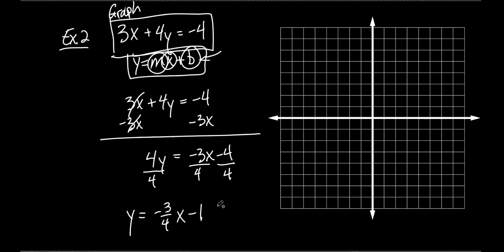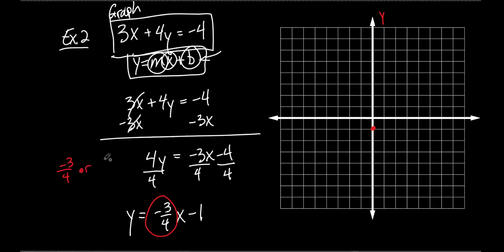So what's the first thing I'm going to put on my graph? The negative 1 — that's the y-intercept. Here's the y-axis. On the y-axis, I put a dot at negative 1. That's the easy part — just look at that number and put it on the y-axis. Now, what's this? Our slope. It's a negative slope, so you could write it as negative 3 over positive 4. Or you could write it as 3 over negative 4 — either way, it doesn't matter. A lot of students get confused on this. Where do we start? At the y-intercept.